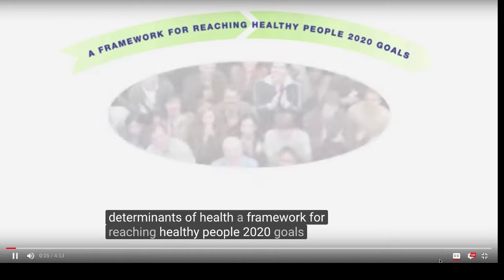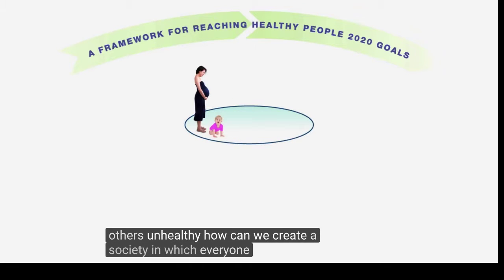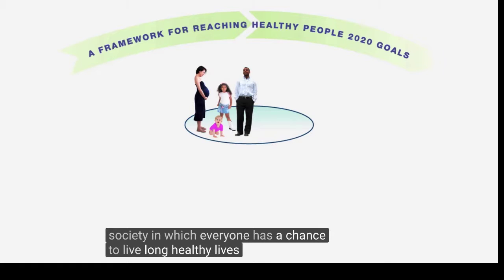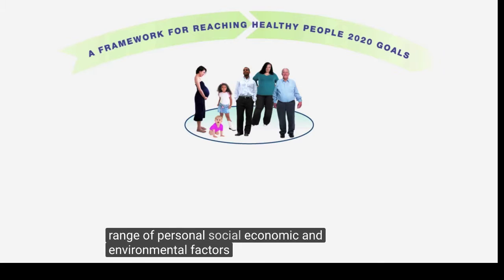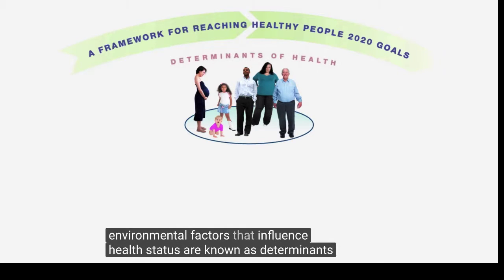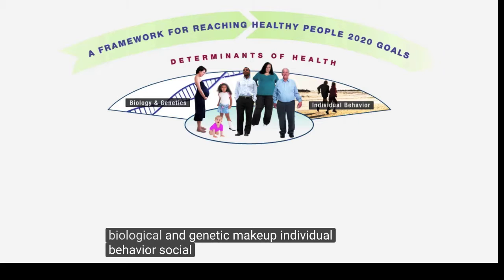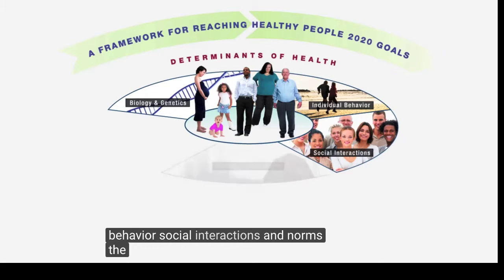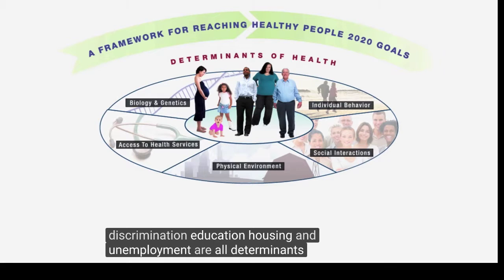Determinants of health: a framework for reaching Healthy People 2020 goals. What makes some people healthy and others unhealthy? How can we create a society in which everyone has a chance to live long, healthy lives? The range of personal, social, economic, and environmental factors that influence health status are known as determinants of health. These include biological and genetic makeup, individual behavior, social interactions and norms, the physical environment, and access to health services. For example, stress, discrimination, education, housing, and unemployment are all determinants of health.